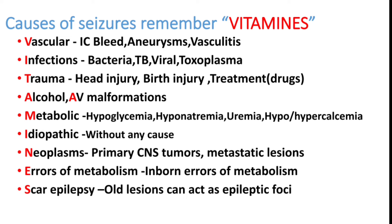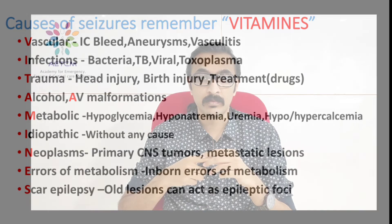I is for idiopathic — without any specific cause. N is for neoplasms, which can be primary CNS tumors or metastatic. E is for errors of metabolism, and S is for scar epilepsy — an old lesion which can act as an epileptic focus.